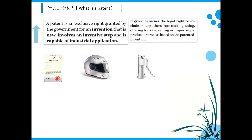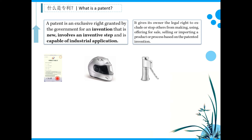The modern patent system is granted by state power, by governments. Patents granted by the government of one country are not acknowledged and protected by the government of another country. For example, if you are granted a patent by the Chinese patent office — the National Intellectual Property Administration of China — this is a Chinese patent, and it is only acknowledged and protected in China.